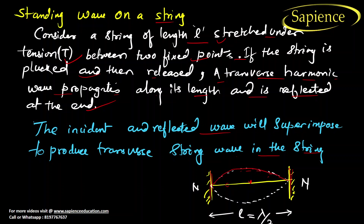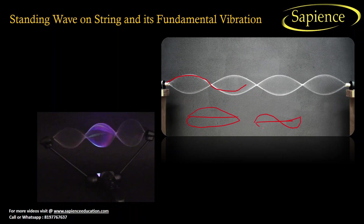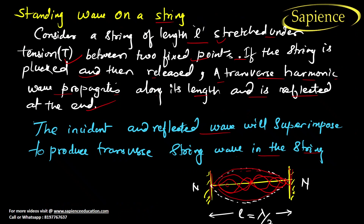If you pluck at the midpoint or any point, it will create different types of waves — a wave like this, or like this. These are examples of standing waves on a string. The length between two successive nodes is equal to lambda by 2, as discussed in earlier videos.